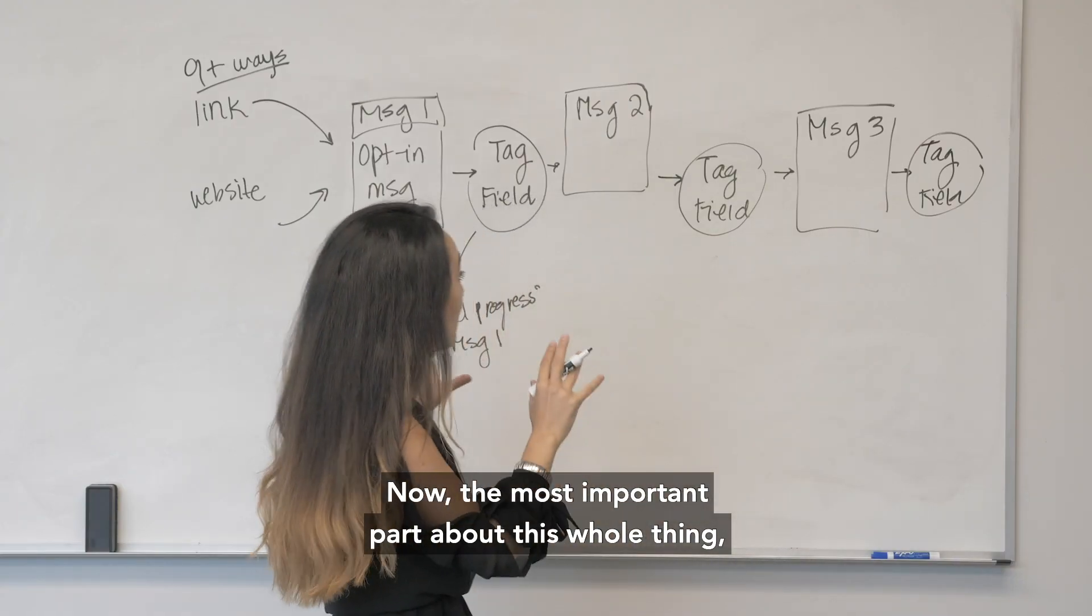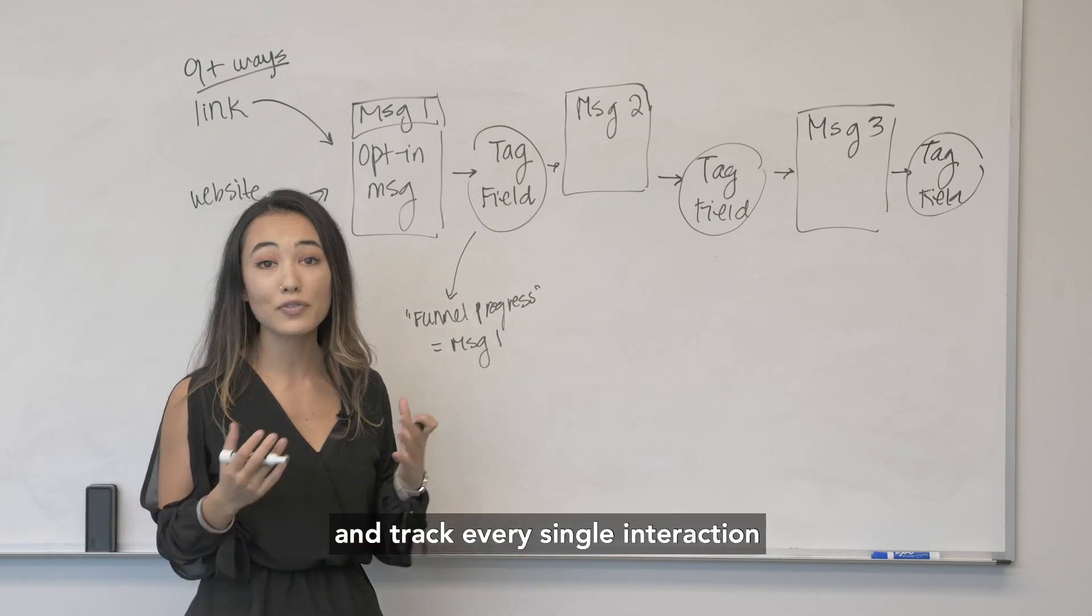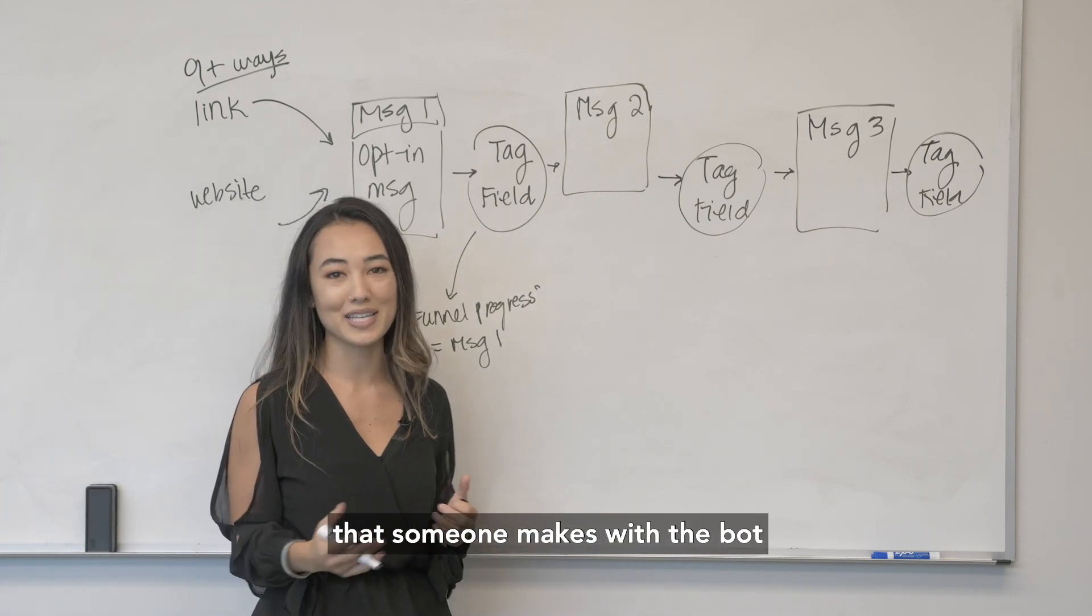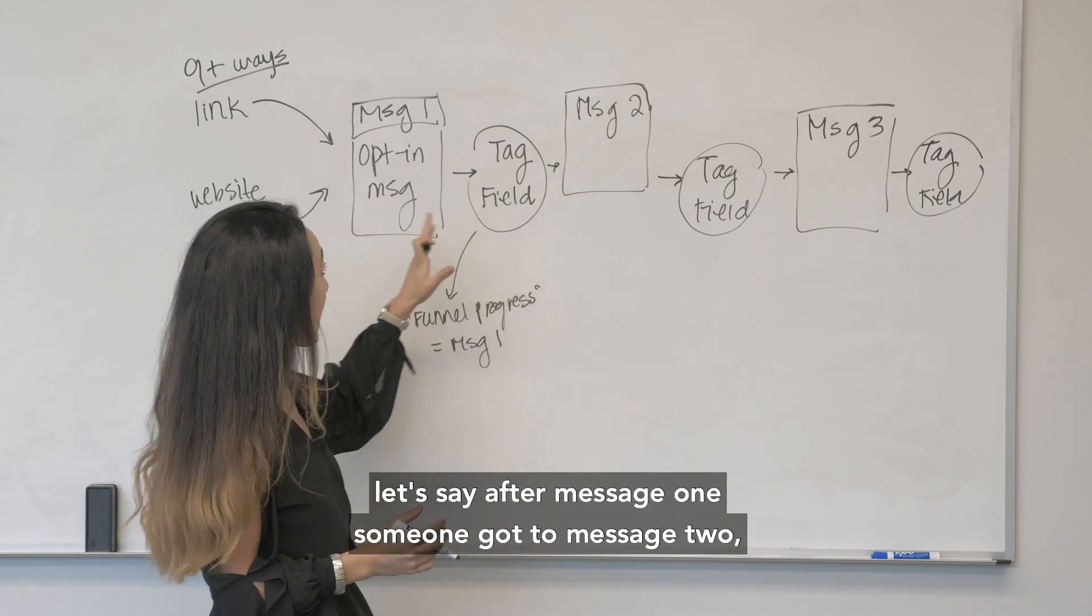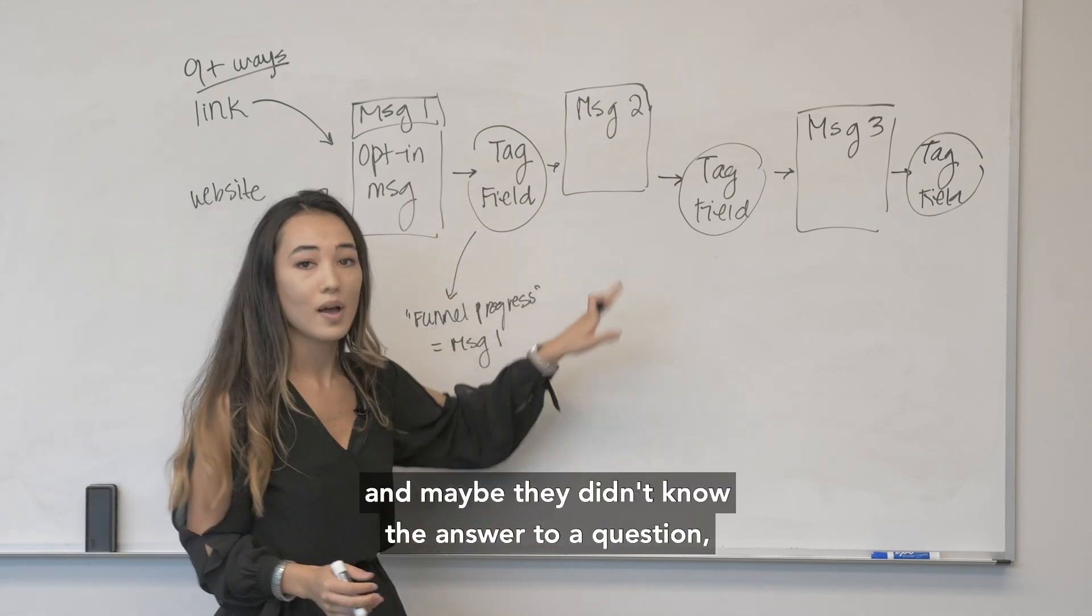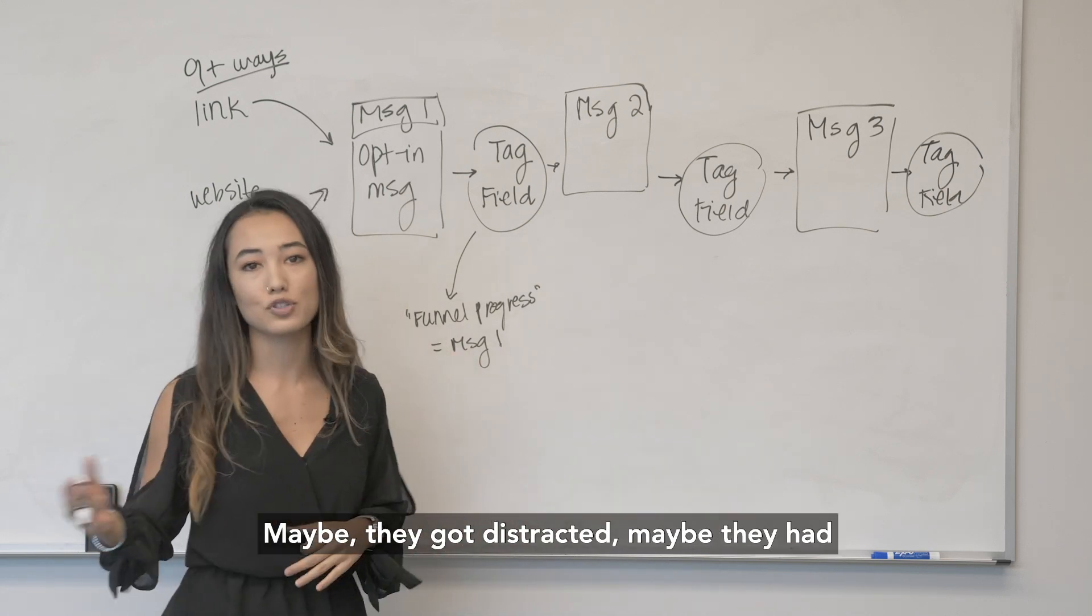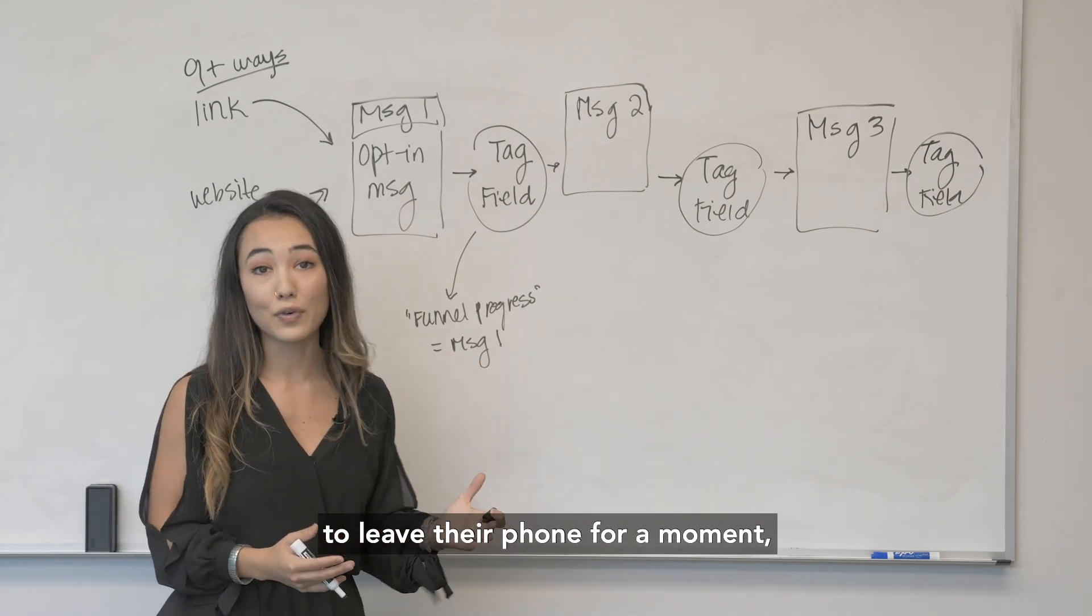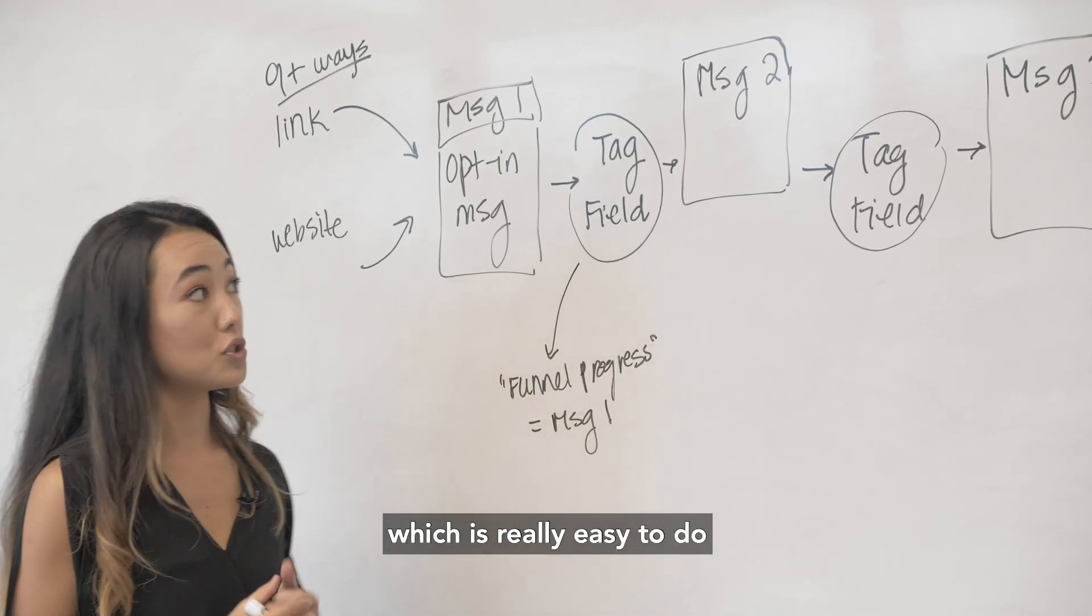Now the most important part about this whole thing and the reason why I emphasize that you can actually follow and track every single interaction that someone makes with the bot is because we can check if, let's say after message one someone got to message two and maybe they didn't know the answer to a question or had to go get some information, maybe they got distracted, maybe they had to leave their phone for a moment, maybe they got a call. All sorts of things can happen and so we want to do a follow up there which is really easy to do because we've been tracking their progress.